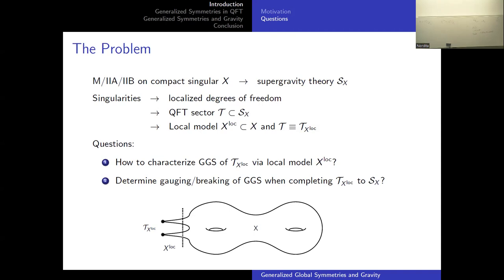Down here I have a small comic of the situation I have in mind. There is some compact geometry, there are some singularities, and taking the local model means literally truncating the space along the dotted line and looking at these now non-compact cones.